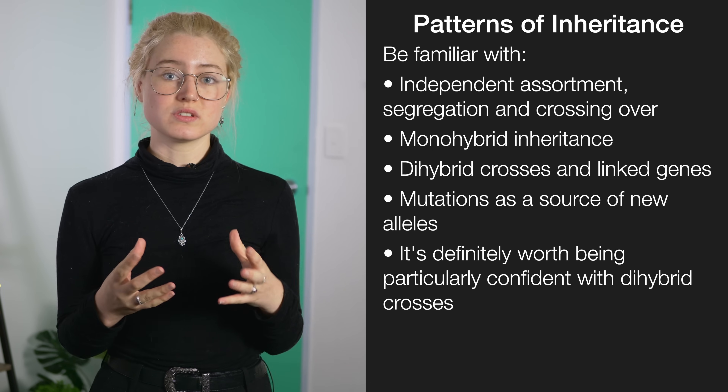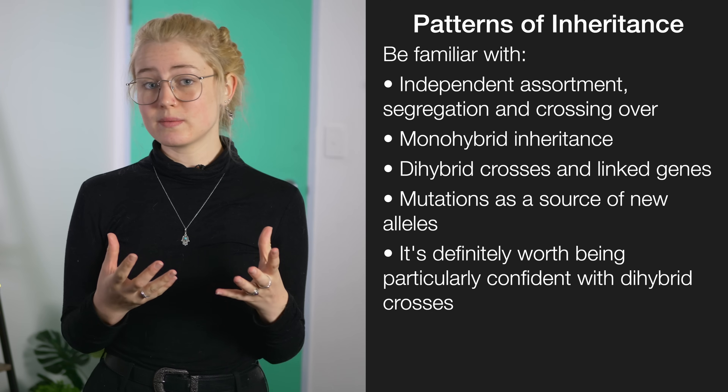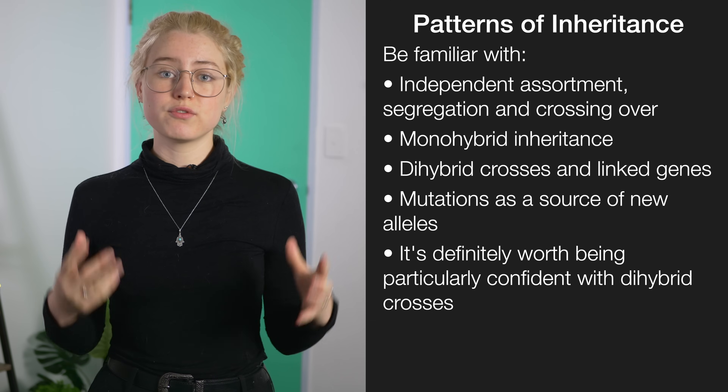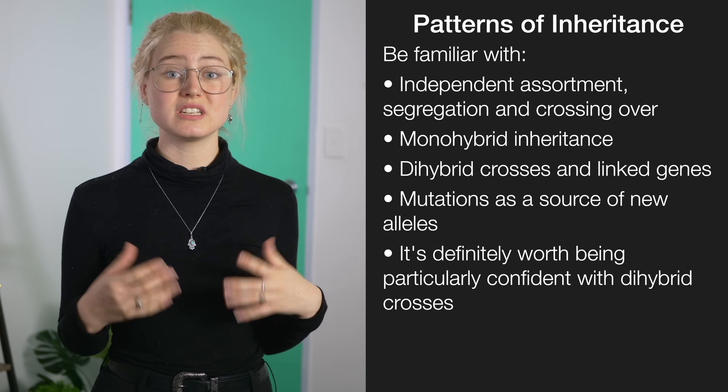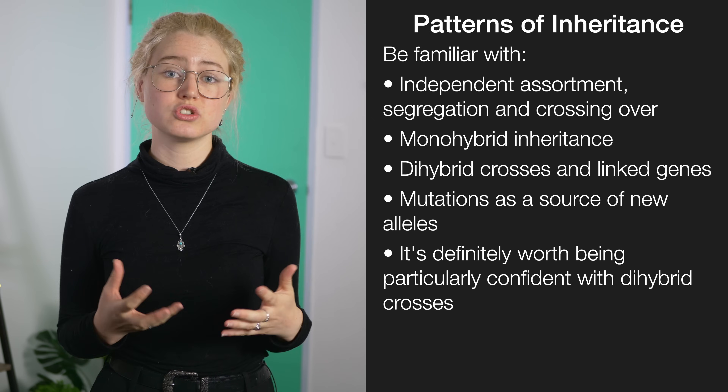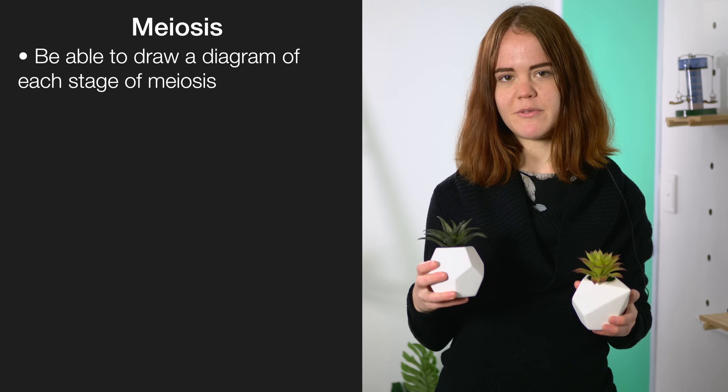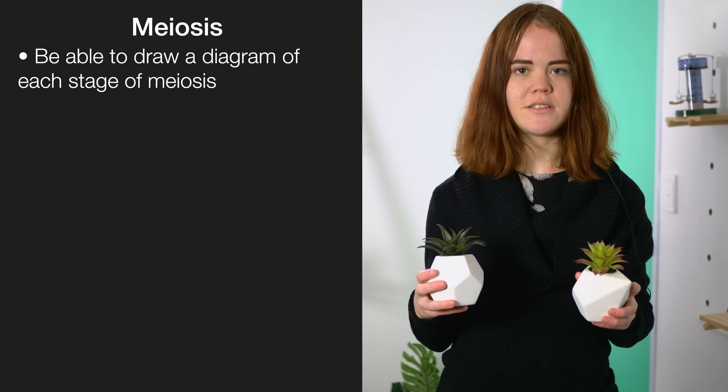Getting down dihybrid crosses is something we'd really recommend because three out of four years of past exam papers actually started with a question on dihybrid crosses. These questions will typically go on to ask you about describing meiosis and aspects of meiosis which decrease or increase genetic variation. When you're describing meiosis, you don't need to go into a lot of detail about what each stage involves, but it's a good idea to be able to draw a rough diagram of what each stage of meiosis has in it.